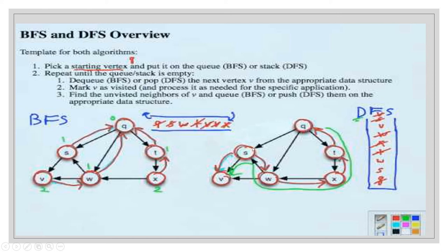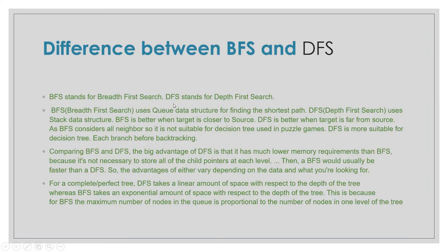Here are both templates — BFS and DFS — so you can see the difference. BFS stands for breadth first search and DFS stands for depth first search. BFS uses a queue data structure for finding the shortest path; DFS uses a stack data structure. BFS is better when the target is closer to the source, and DFS is better when the target is far from the source. As BFS considers all neighbors, it is not suitable for decision trees used in puzzle games, whereas DFS is more suitable for decision trees as it explores each branch before backtracking.